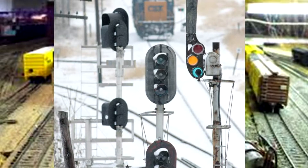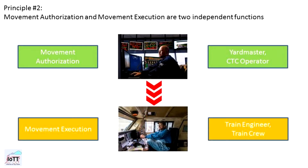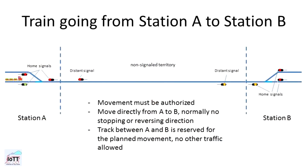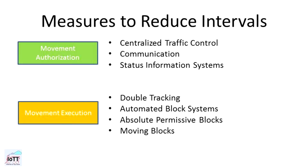In video number 20, I talked about some fundamental concepts when it comes to train movements and signaling. In a nutshell, safety is achieved by separation of movement authorization and movement execution. The goal is to make sure that only one train can be at the same time in any given section of the route network. These safety measures to properly separate trains have their toll when it comes to track throughput and efficiency. So today we are going to discuss methods developed over the years by the railroad industry to increase efficiency while maintaining traffic safety.